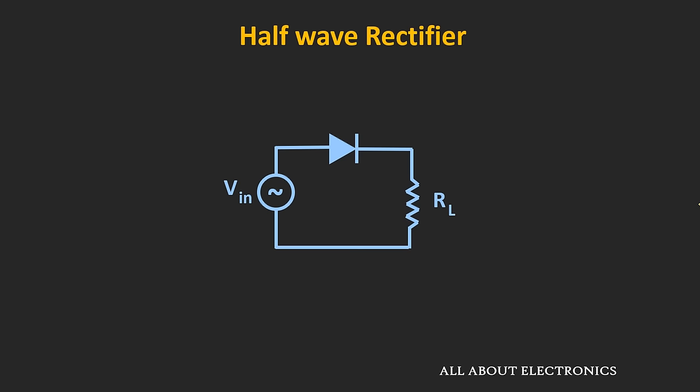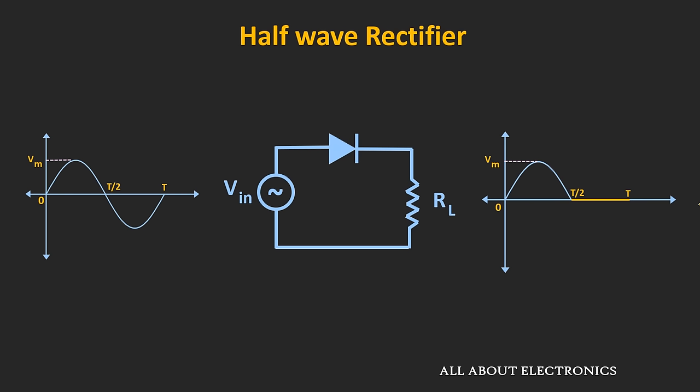As you can see over here, the input signal is applied to the load through this diode. So whenever the sine wave is applied as an input, then at the output you will get this kind of waveform. This circuit only passes the positive half cycle of the sine wave and it completely rejects the negative half cycle. Now let's understand how this circuit works.